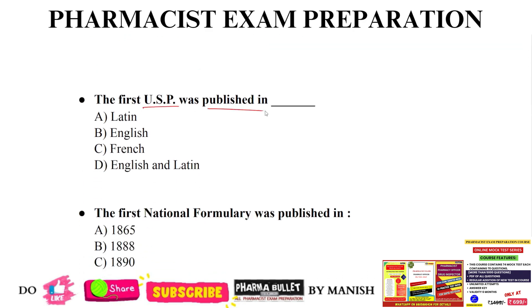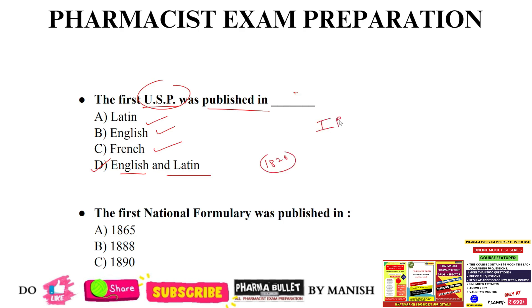Next question: the first USP was published in which language? Options: Latin, English, French, or English and Latin? The correct answer is English and Latin, option D. The first USP was published in 1820. Then the first Indian Pharmacopeia was published in Latin language, by Dr. B.N. Ghosh, and it contains 986 monographs.